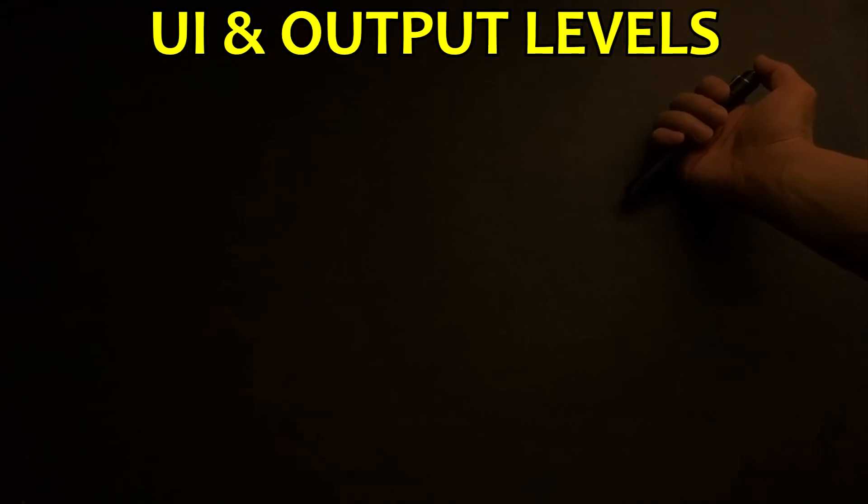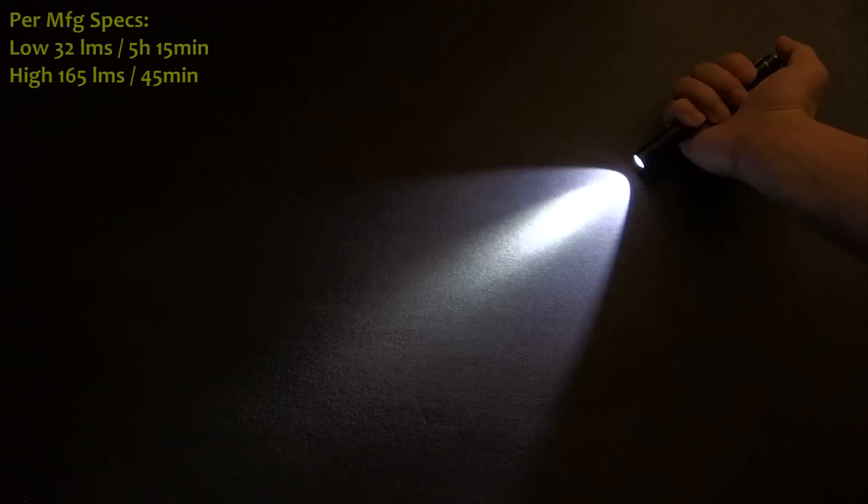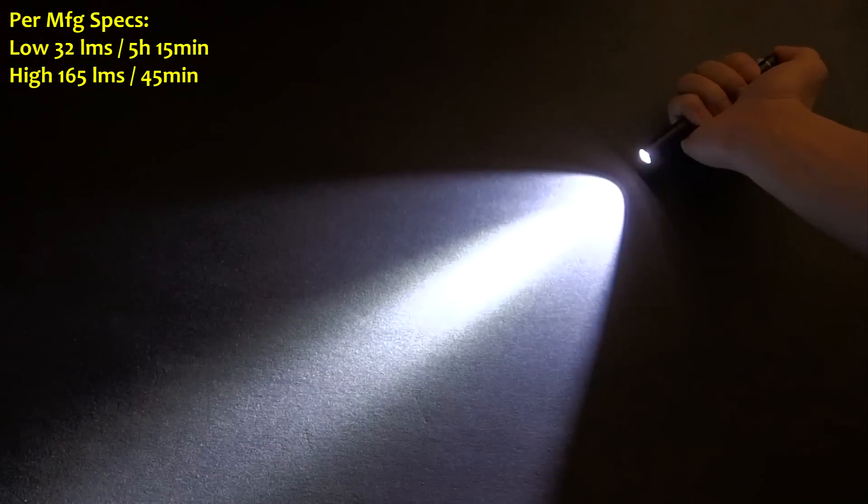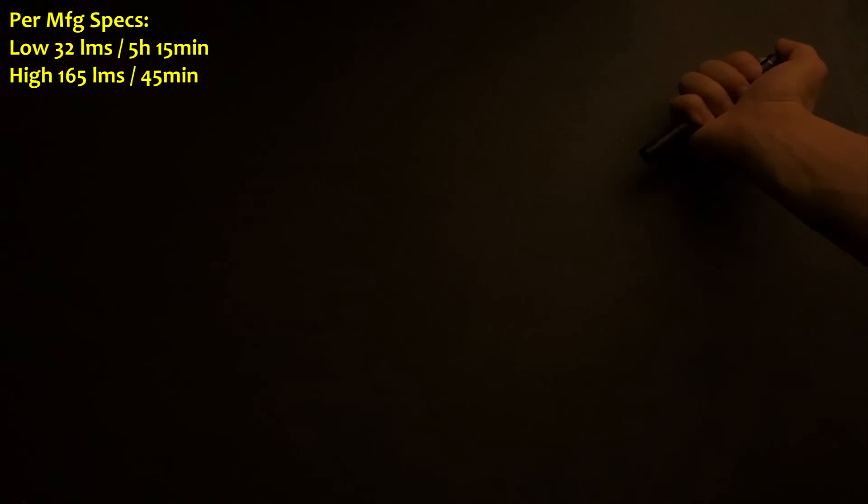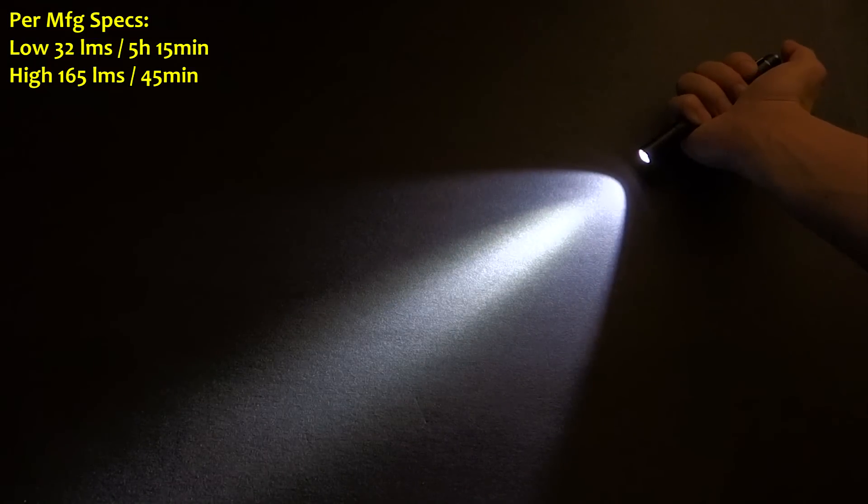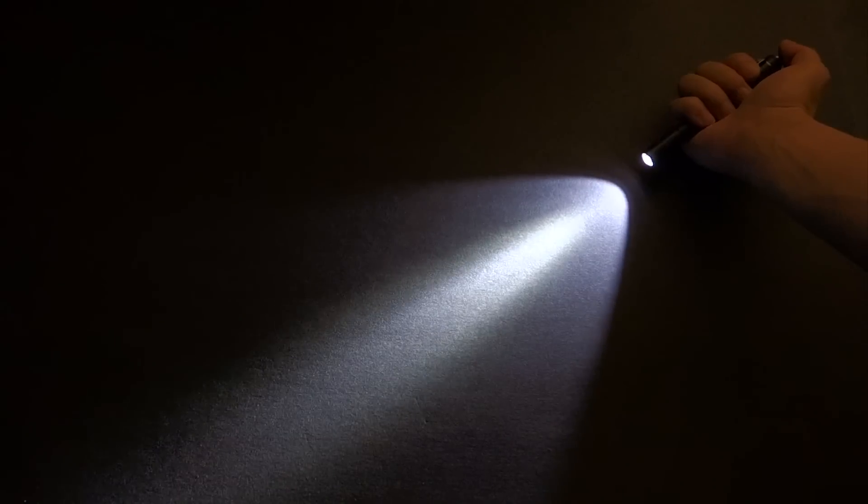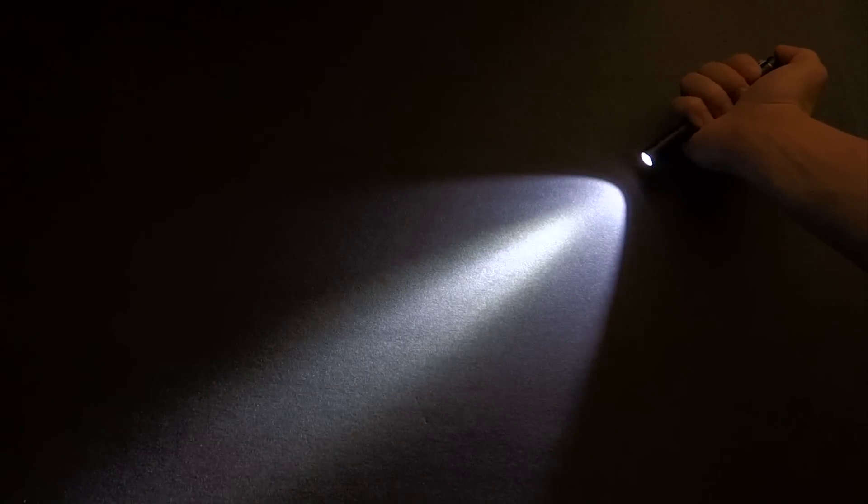In terms of the UI, there is actually no memory mode. The light will always turn on in low mode. And then, with a half press, you could go into high mode. Now, if you shut it off, you wait more than two seconds, it'll default back to low mode. Likewise, if you want to change the mode, it has to be done within two seconds. So, let's just say you're in the low mode, shut off the light. If you wait longer than two seconds, it'll come back on in low mode. If you had done that immediately, it would turn back on into high mode.